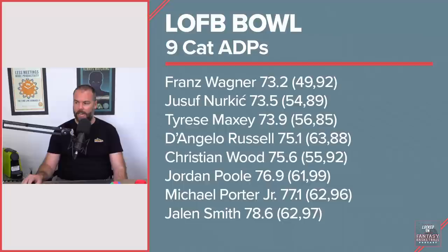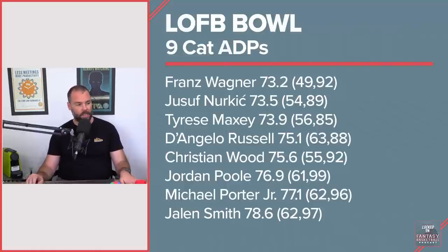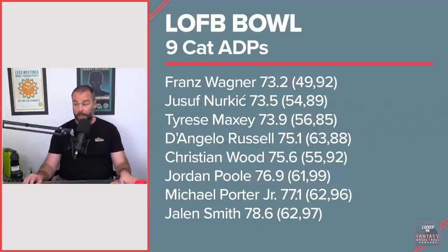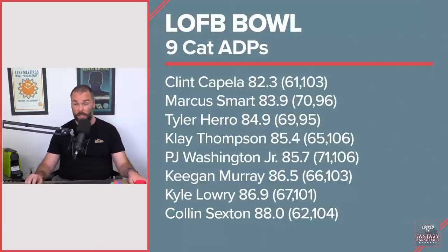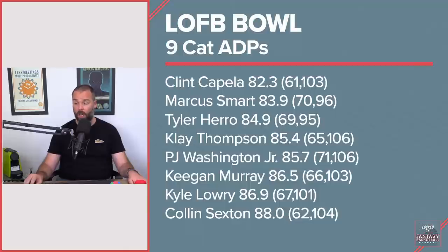Jordan Poole with a 77 ADP — highest 61, lowest 99. Michael Porter Jr. at 77 with a 62 to 96 range. Jalen Smith at 78.6 — he's going later than that in a lot of spots and fell actually to 97 in one of these drafts, and has struggled a little bit in preseason. His highest was 62, which is probably a little bit early. Clint Capella at 82.6 — that's higher than I've seen him go — went at 61 in one league but also 103.